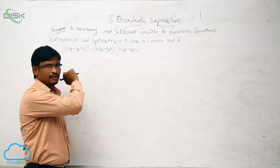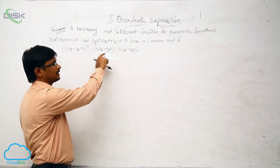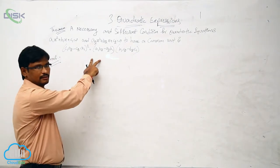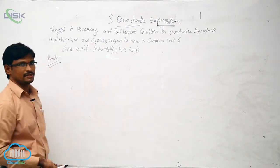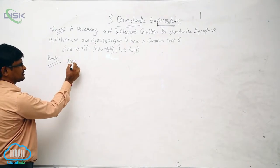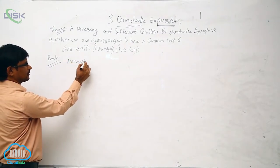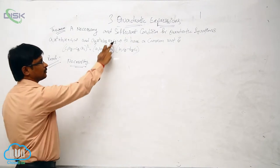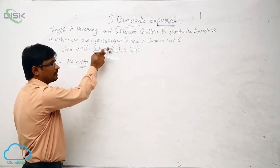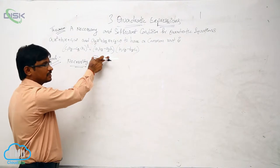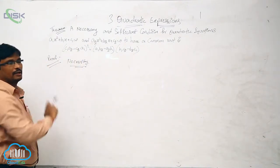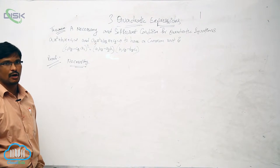There are two quadratic equations. For these two quadratic equations, if one root is common, then the condition is this one. Now we will see the proof of this. First, I am taking the necessary condition. What is a necessary condition? If the roots for these two quadratic equations have a common root, we have to prove this one. And the sufficient condition is: if you take this one, we have to prove that these two quadratic equations have a common root.